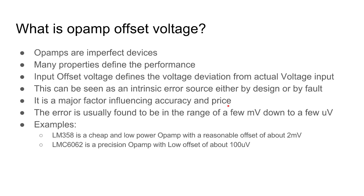You'll find this error to be in the range of a few millivolts down to a few microvolts. For example, the LM358 — a cheap, robust, and popular op amp — has a reasonably low offset of about 2 millivolts, which depending on your application may or may not be a problem, but it's something to factor into your design and can be read from the datasheet. Another example is the LMC6062, which is a precision high-speed op amp with a low offset of 100 microvolts — more than an order of magnitude better than the LM358. These are quite accurate devices, which I'll chat about a bit later.